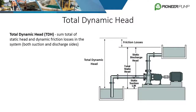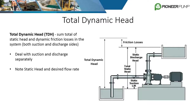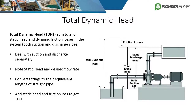Total dynamic head is defined as the sum of static head and dynamic friction losses in the system on both the suction and discharge sides. Analyzing the suction and discharge sides separately makes the calculation easier. A simple way to calculate friction losses is using the equivalent length method, where all fittings are converted to their equivalent lengths of straight pipe. Those equivalent lengths and the actual total pipe lengths are added together to find total friction losses, which are then added to static head to get total dynamic head.